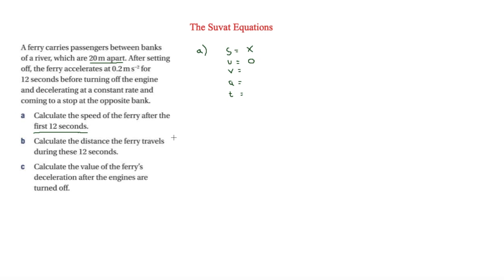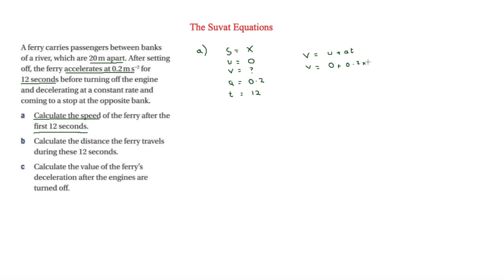The final velocity V is what we're trying to find, so we put a question mark. Acceleration A is 0.2 m/s², and T is 12 seconds. Since S is not needed, we use V equals U plus AT: V equals 0 plus 0.2 times 12, giving V equals 2.4 metres per second.